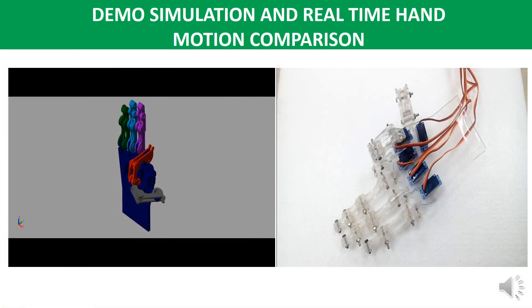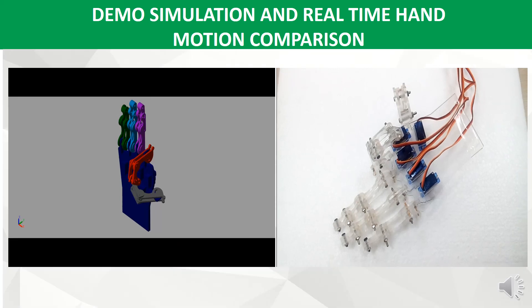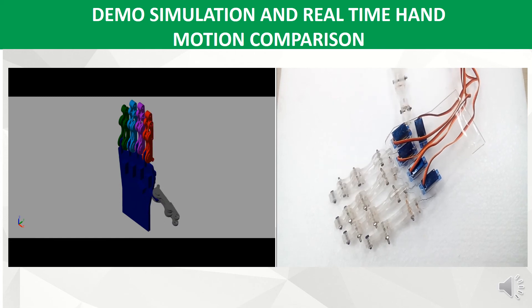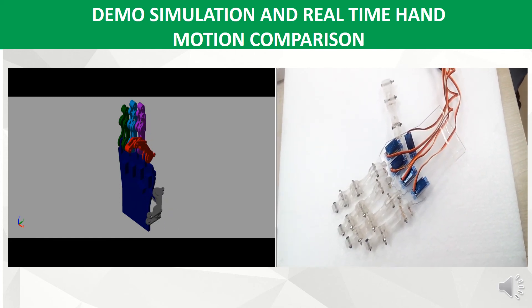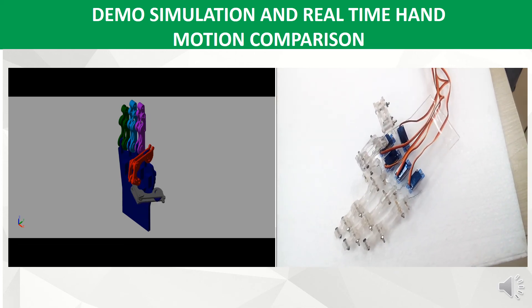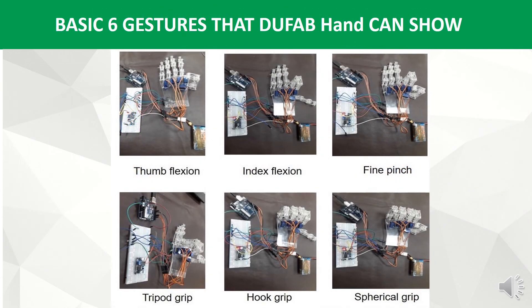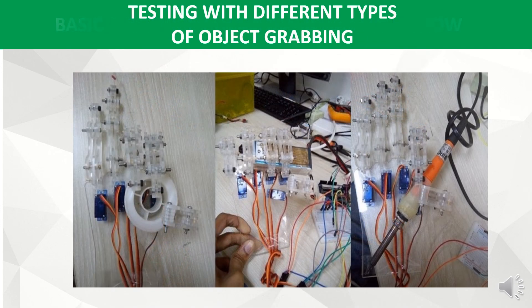Now I will show a demo simulation of gesture classification performed in MATLAB using the classified signal as input. You can see the real-time movement performed simultaneously; the performance in both cases is quite close. For time constraints we have shown one movement, but you can contact us for other movement videos. Basic gestures of our hand are shown, and we also tried to use this hand for grabbing different objects.